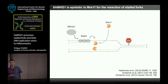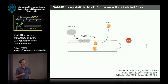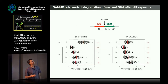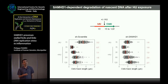What could SAMHD1 be doing at the forks? You've heard about the idea that MRE11 is recruited to paused replication forks, degrades nascent DNA, and this degradation is prevented by BRCA2 and RAD51. We asked whether SAMHD1 could be involved in this process. We released cells into hydroxyurea: first labeling with IdU in the absence of drug, then adding hydroxyurea for increasing periods of time, and measuring the length of both the CldU and IdU tracks.